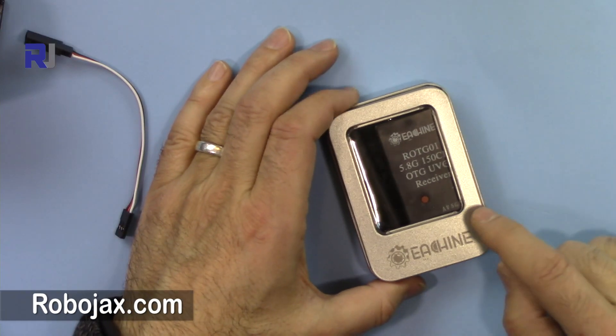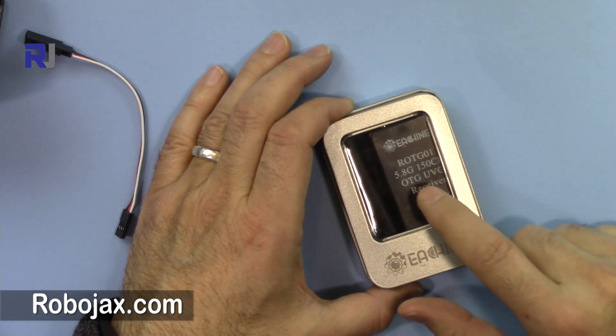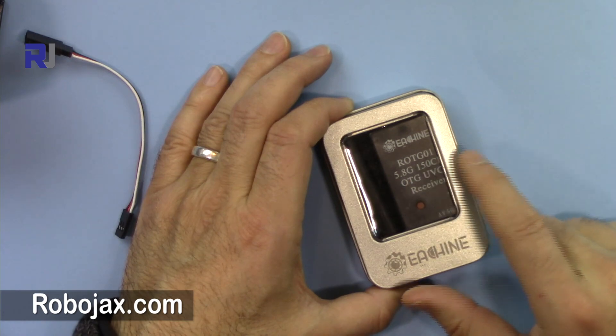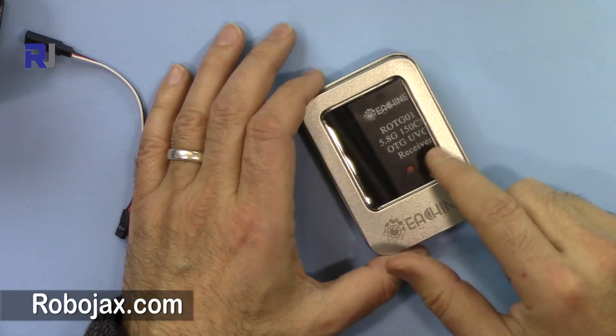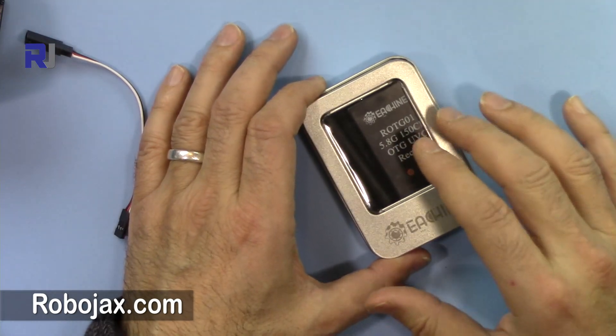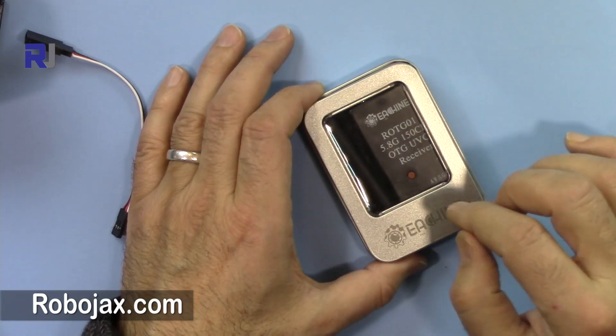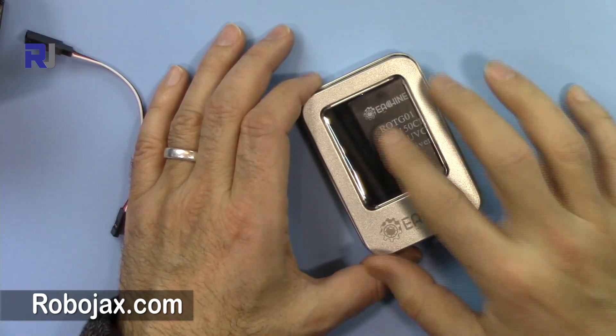Hi, welcome to Robojax. In this video we're going to learn about this ROTG01 Android FPV receiver. This has been introduced to the market by many labels. It seems like a generic product that anyone can put their name on. This one is labeled as eShine.